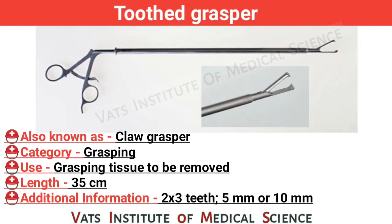Tooth grasper, also known as claw grasper. Category: grasping. Use: grasping tissue to be removed. Length: 35 cm. Additional information: 2 x 3 teeth, available in 5 mm or 10 mm.